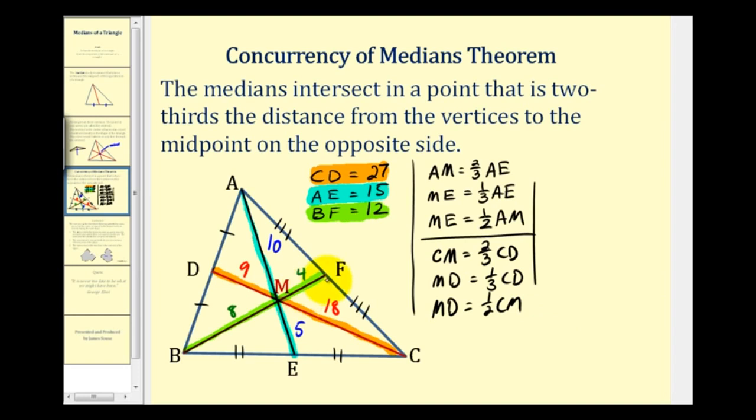Let's go ahead and take a look at the last median in green, BF. BM will be two-thirds BF. So MF will be equal to one-third BF. And then finally, MF will be one-half of BM.